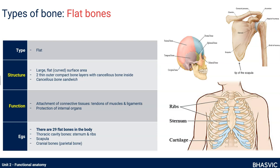Why are flat bones structured with a big flat surface area? Because their two functions are protection of internal organs — the sternum protects your lungs and heart, your cranial bones protect your brain — and also that big surface area is really important for having muscles and ligaments to attach to. The scapula, for example, has lots of muscles attached via tendons and ligaments. Flat bones you need to know include the sternum, ribs, scapula, cranial bones and your pelvic bones.